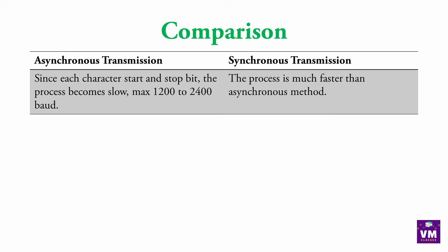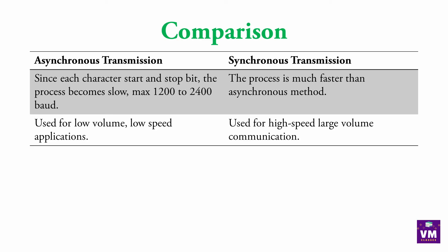Since each character has a start bit and stop bit and is sent character by character, the process becomes slow — max 1200 to 2400 baud rate. Synchronous में block by block information transfer होती है, इसलिए इसकी speed बहुत ज़्यादा होती है compared to asynchronous. Asynchronous is used for low volume, low speed applications, while synchronous transmission is used for high speed, large volume communication.